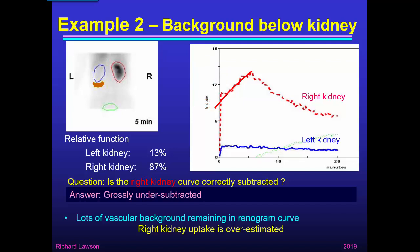There's still lots of blood background remaining in the right renogram curve, because we've only subtracted a little bit of tissue and there's still a lot of blood background there. Remember, this is DTPA, which has less activity in the kidney and much more in the blood. So in this case, we've certainly overestimated the uptake in the right kidney.